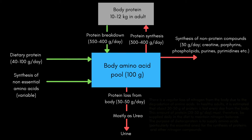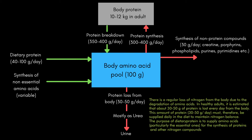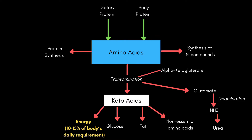The next outgoing source from the amino acid pool is obligatory protein loss. Every day, your body loses around 20 to 50 grams of protein, and you cannot completely block this. This is why you must consume around 20 to 30 grams of protein daily at minimum to maintain nitrogen balance. Additionally, some protein — around 10 to 15% of daily energy intake — gets converted into energy, though protein's primary role is not energy production; that's the job of carbohydrates and fats.